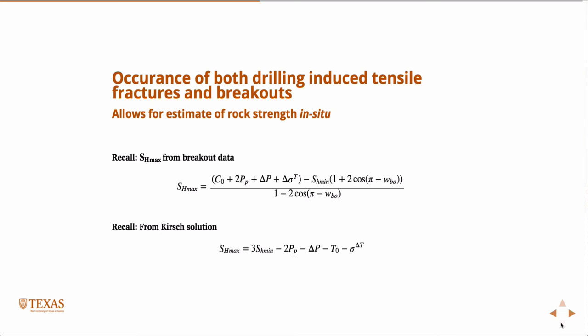If you equate the two, say you measured SH min from some leakoff test, now your delta P is your normal delta P - the normal mud weight minus the pore pressure. You know the pore pressure. You can assume that the tensile strength is very small or zero. You can monitor the wellbore breakout widths. You know SH min. The point is, everything in both of these equations is known except for C0.